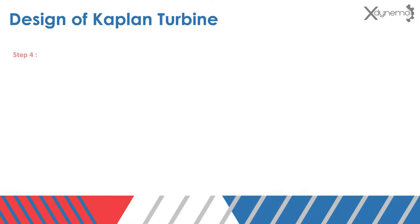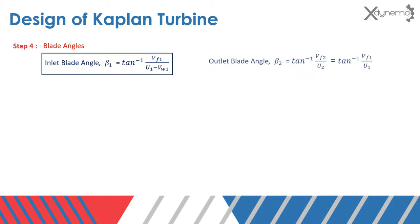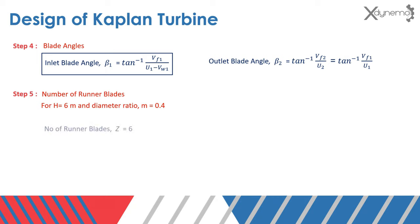Step 4: blade angles. The blade angles can be obtained from velocity diagrams. Inlet and outlet blade angles can be calculated using these equations. Step 5: number of runner blades. For 6 meters head and diameter ratio of 0.4, the number of blades is obtained as 6.